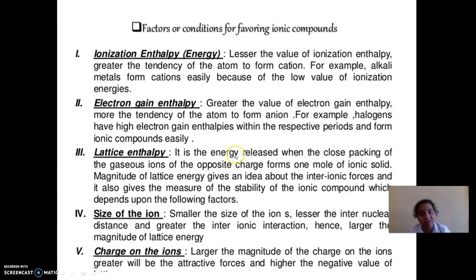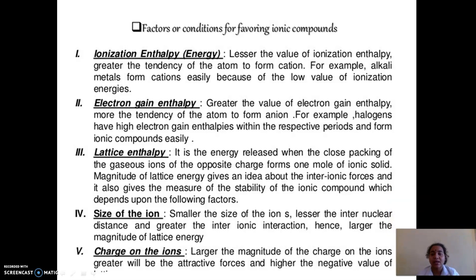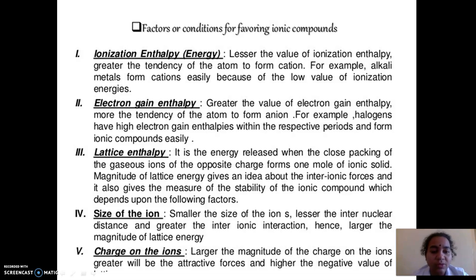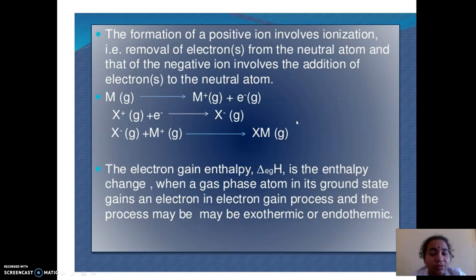What do we mean by ionization enthalpy? We already discussed this — it is the amount of energy required to remove one electron from the isolated neutral gaseous atom in order to form a positive ion or cation. In ionic compounds, we know that there is a formation of a cation.